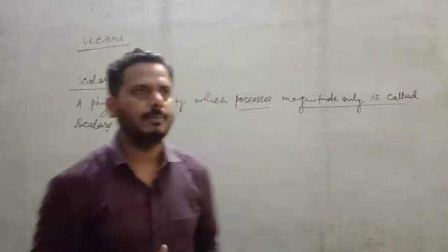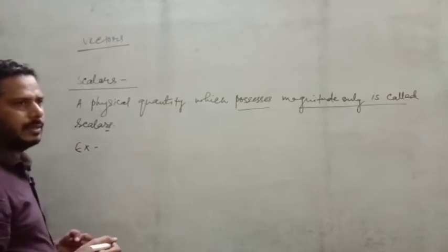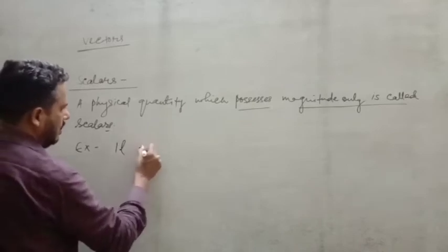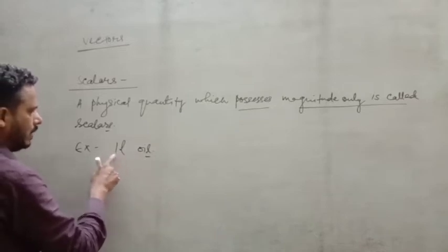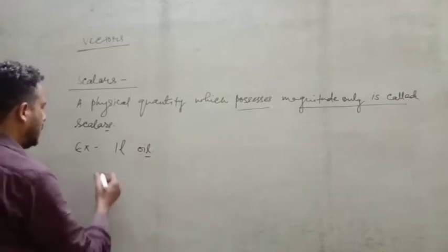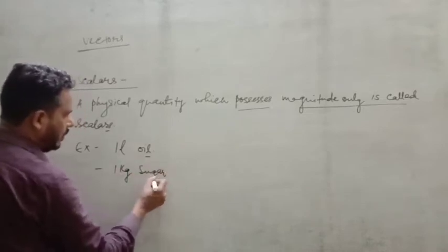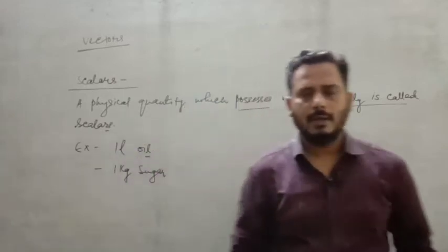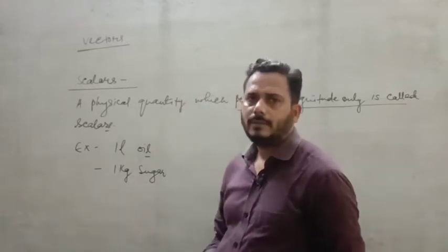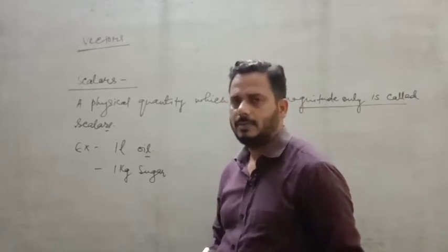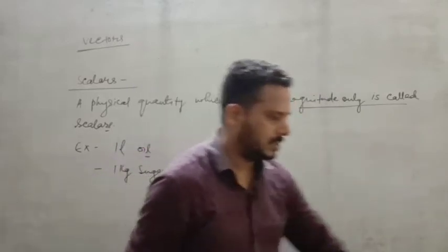For example, one liter of oil — this is taken in liters, so it is only a magnitude. Similarly, one kilogram of sugar — when you go to the market to buy sugar, one kg is a pure magnitude with no direction.